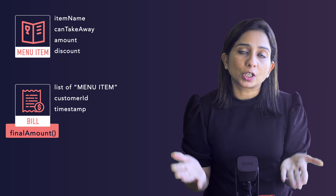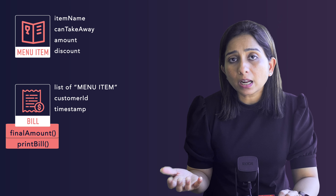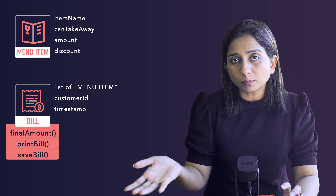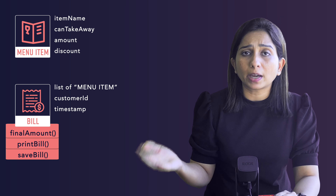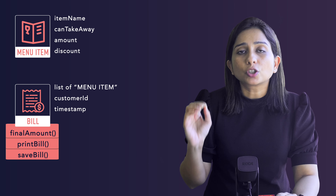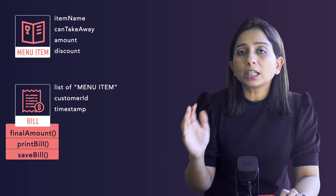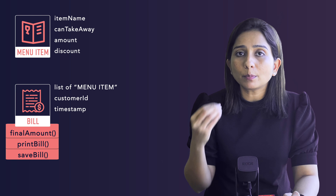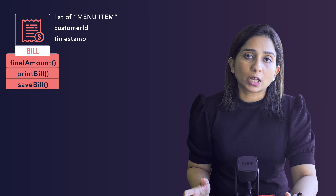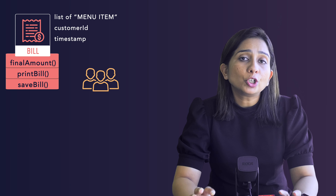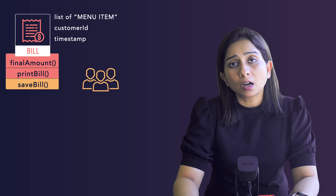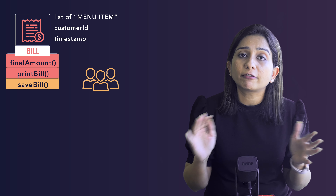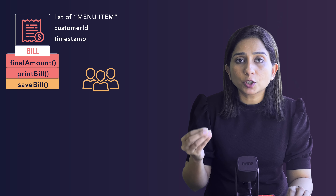Once the bill is generated, the bill also has to be printed, and the same bill data also has to be saved to some location — a local file, a database, or anything. It can seem perfectly fine to keep all these methods — calculating, printing, and saving the bill — in the same Bill class. But there is a team who wants to change the database implementation of how the bill is saved, maybe changing the data store altogether or modifying the columns. They would come and make changes to this class.